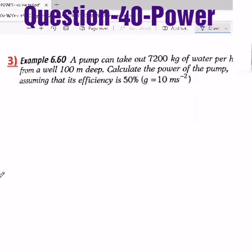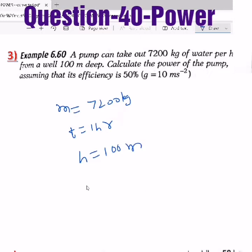Sometimes the question is based on efficiency. Efficiency means output by input. Let's see one such question. A pump can take out 7200 kg of water per hour from a well of depth 100 m. Now calculate the power of the pump, assuming that its efficiency is 50%. Efficiency is 50% means this is the output power it is performing.